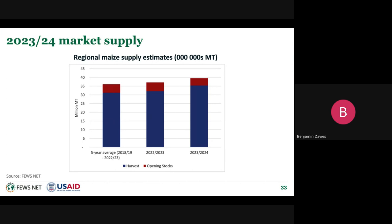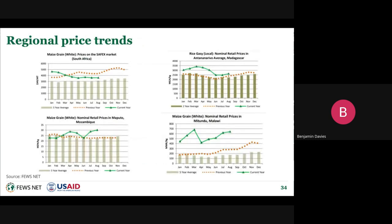Domestic deficits are expected to continue to be met through sourcing maize from regional markets. Across the region, staple food prices have stayed largely stable or are beginning to increase with the approaching lean season. White maize grain prices in South Africa, rice prices in Madagascar, and maize grain prices in Mozambique and Malawi are shown as examples. Overall, prices are higher than the five-year average and higher than last year across most selected markets. In areas badly affected by shocks in the last production year, such as Matundu, Malawi, maize prices are higher than both last year and the five-year average.